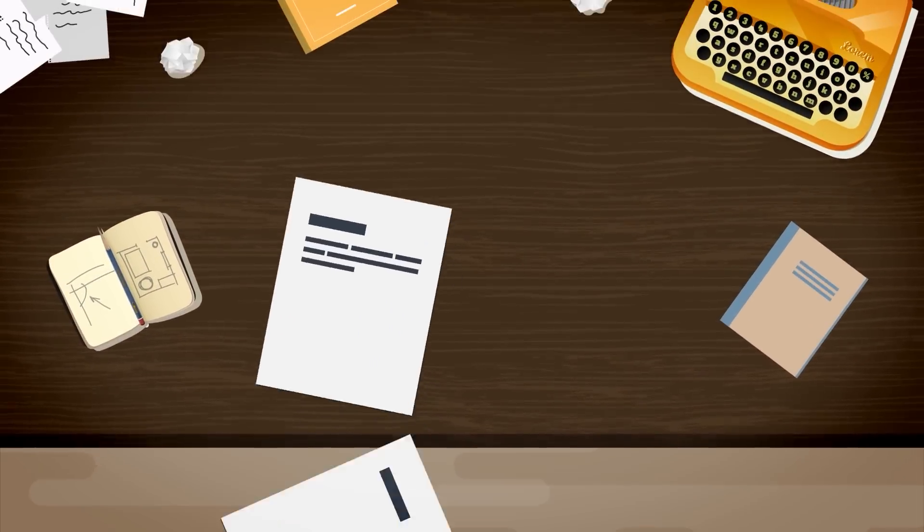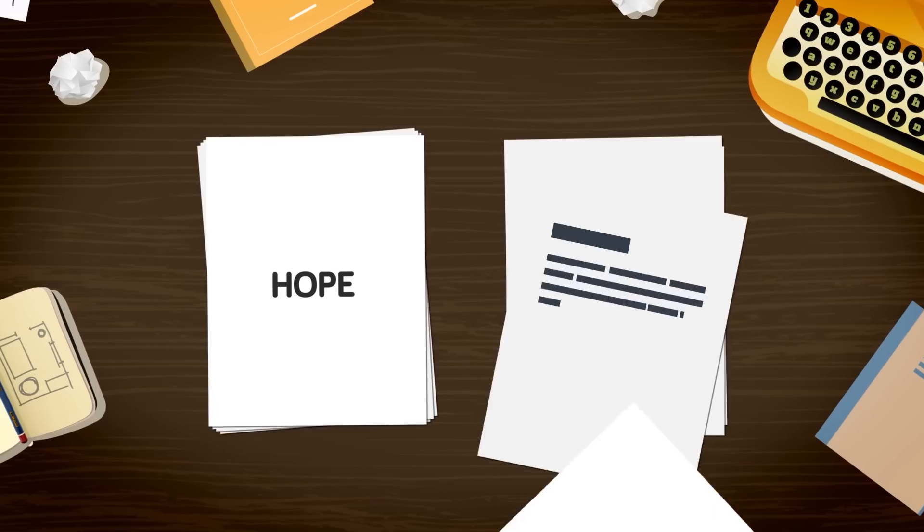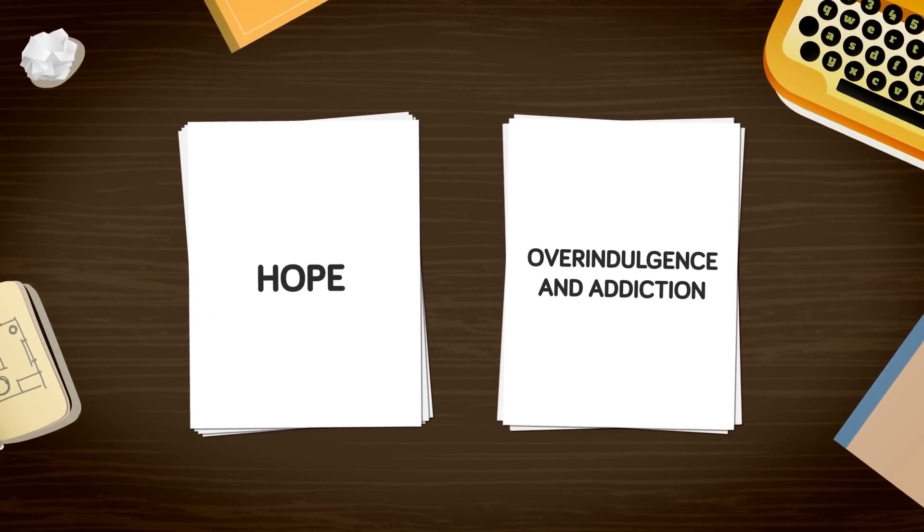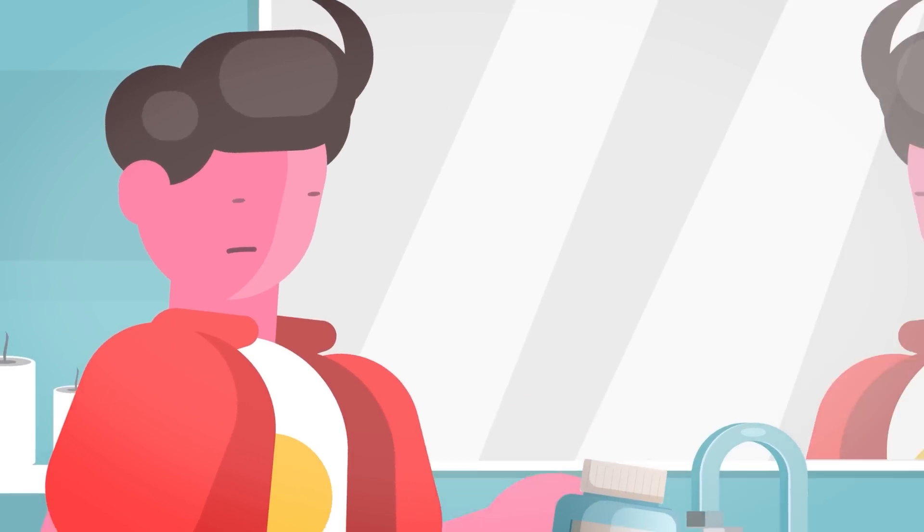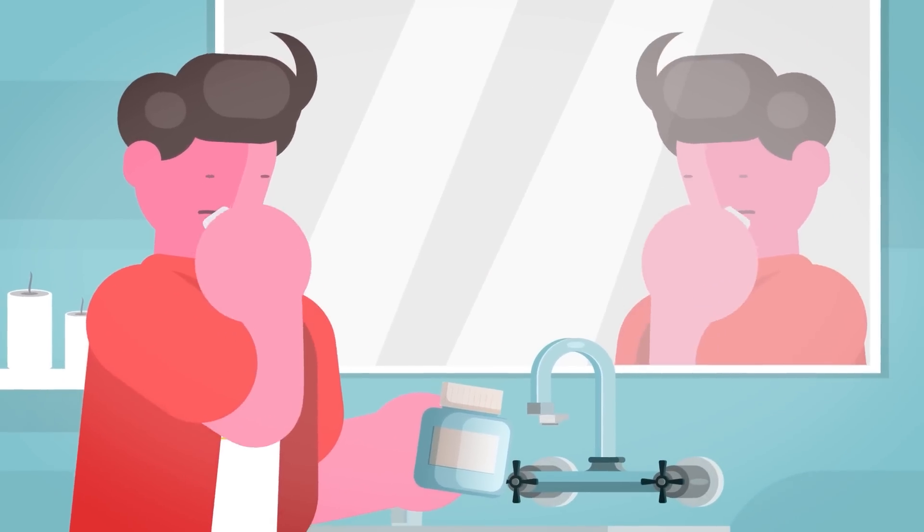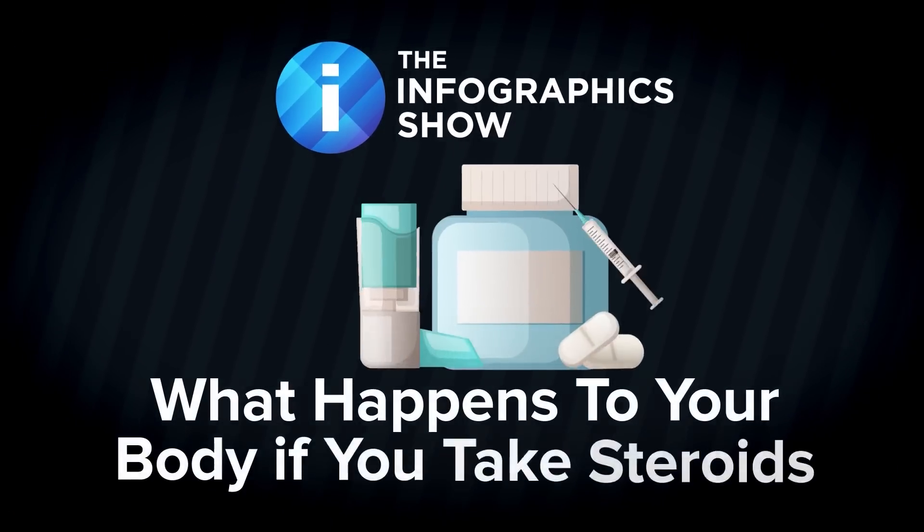There are two very different stories when it comes to steroids. The first is one of hope, the other is one of overindulgence and addiction. There are types of steroids that can save your life. However, when steroids are taken in excess and without the approval of a medical professional, they can also lead to your death. Which type of steroids should you never put in your body? Let's find out.